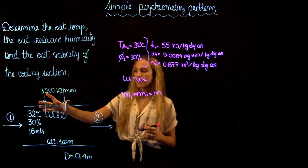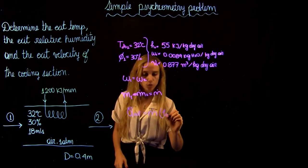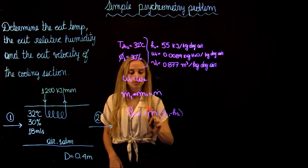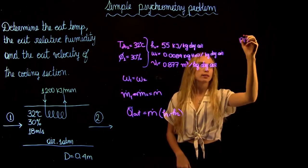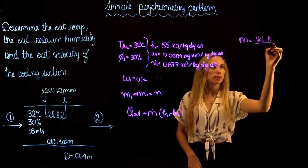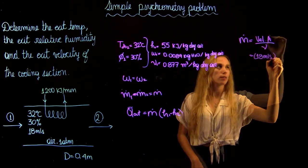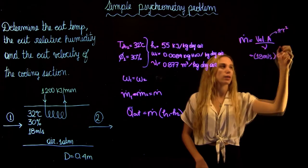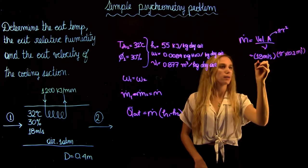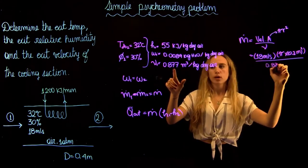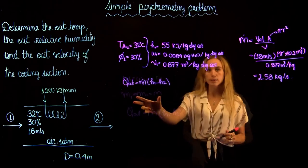We know that the heat out equals the mass flow rate times h1 minus h2. We have h1 and the heat out, so we need the mass flow rate. The mass flow rate equals velocity times cross-sectional area divided by specific volume. The velocity is 18 meters per second, the pipe area is pi times 0.2 meters squared, and dividing by the specific volume we found gives a mass flow rate of 2.58 kilograms per second.